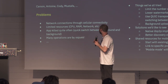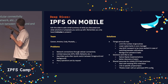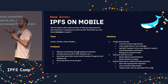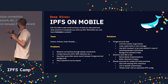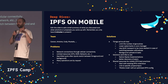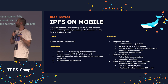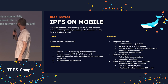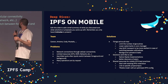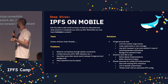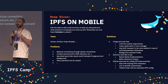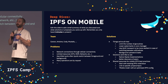Problems were listed out as network connections, specifically through cellular connectivity and different types of networks — which was a major problem for findability and DHT queries — and limited resources, mainly limited access to operating system resources.